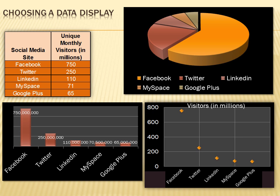How about a scatter plot? On the scatter plot, I can see Facebook is about 750 and Twitter about 250. But I don't think this is nearly as attractive as the pie chart. If I were creating a brochure, I'd use the pie chart because it's visually much more engaging — people are going to find it more appealing.